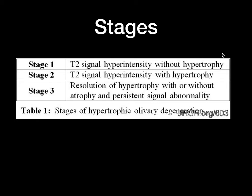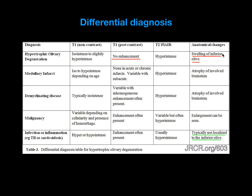There are three stages on imaging. The initial stage is T2 signal hyperintensity without hypertrophy. Stage 2 is hyperintensity with hypertrophy. Stage 3 is resolution of hypertrophy with atrophy and persistent altered signal intensity. These changes occur over a period of years in hypertrophic olivary degeneration.